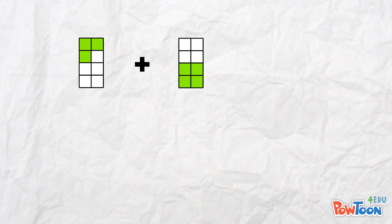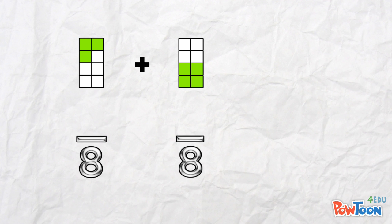Both of the wholes are divided up into 8 parts, so we've got denominators of 8 on both of these fractions. In total, we have some number of parts out of 8. We add the shaded parts to find out how many parts we've got, and that's going to be our numerator.